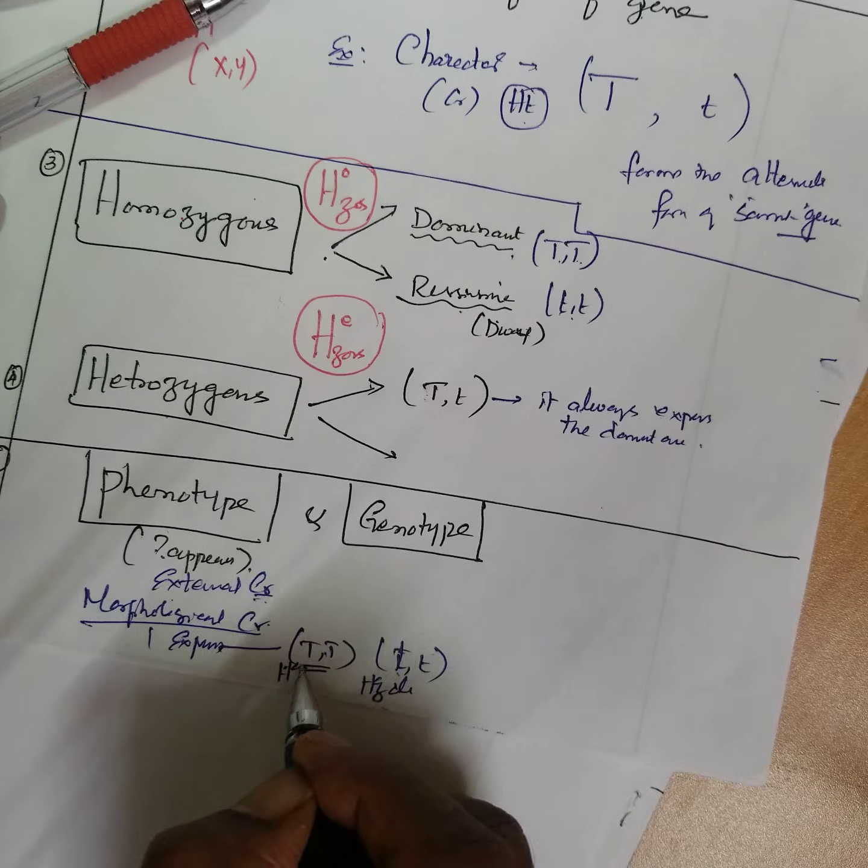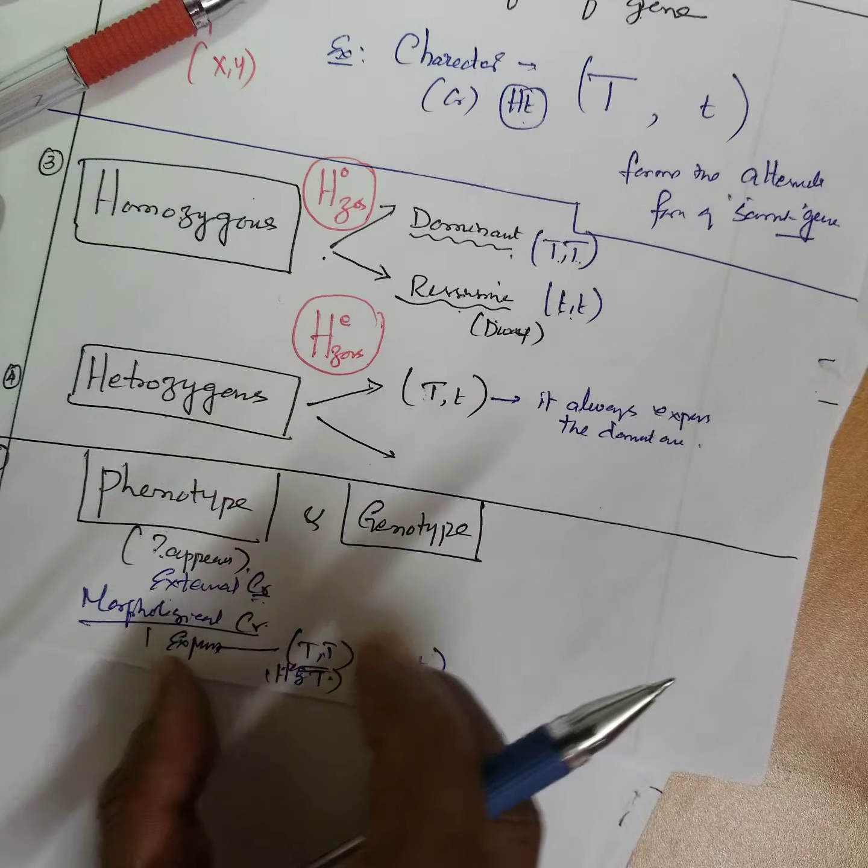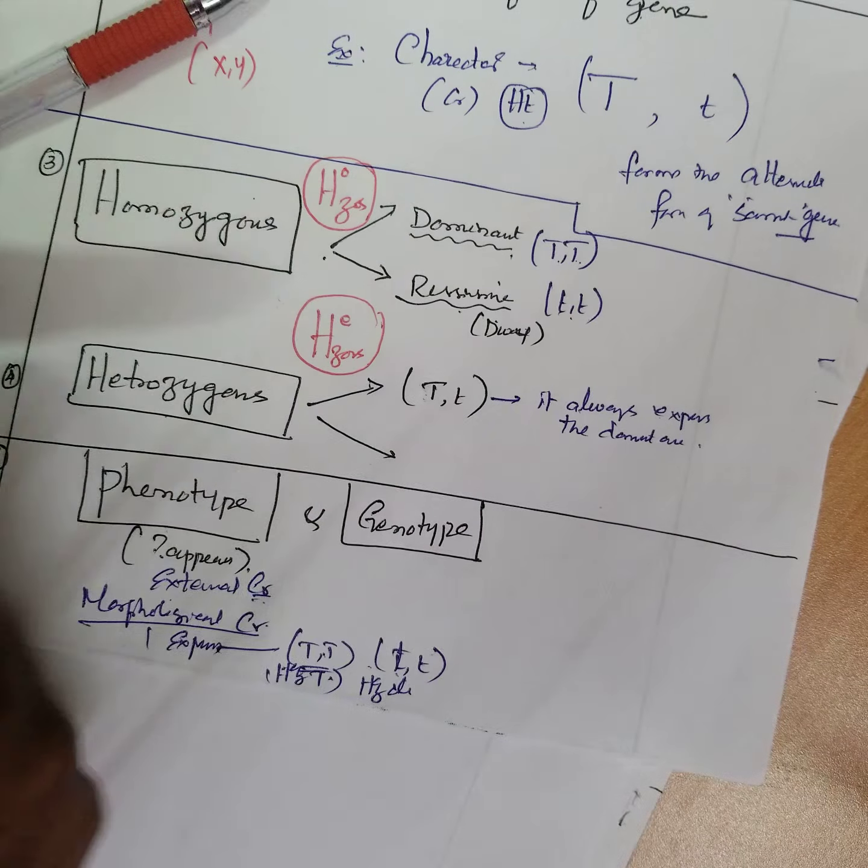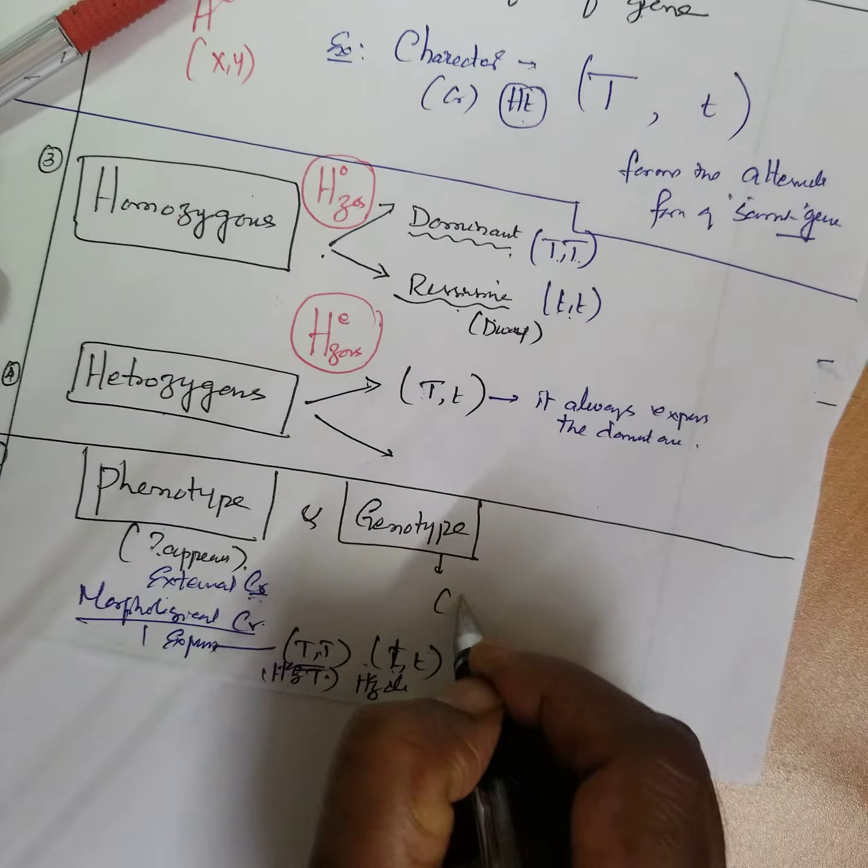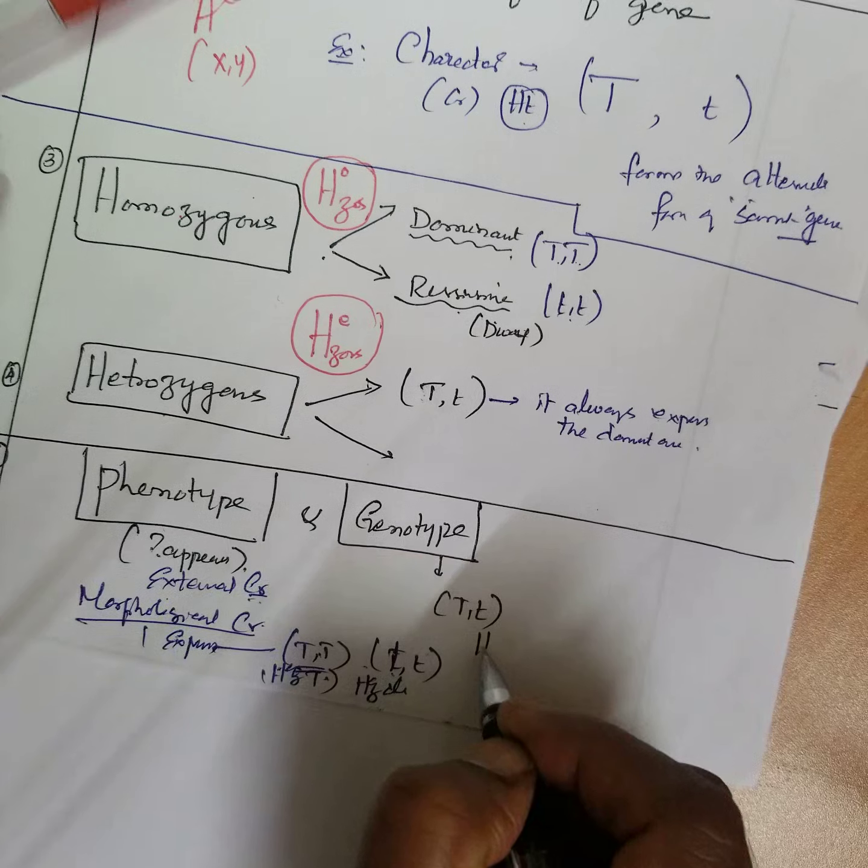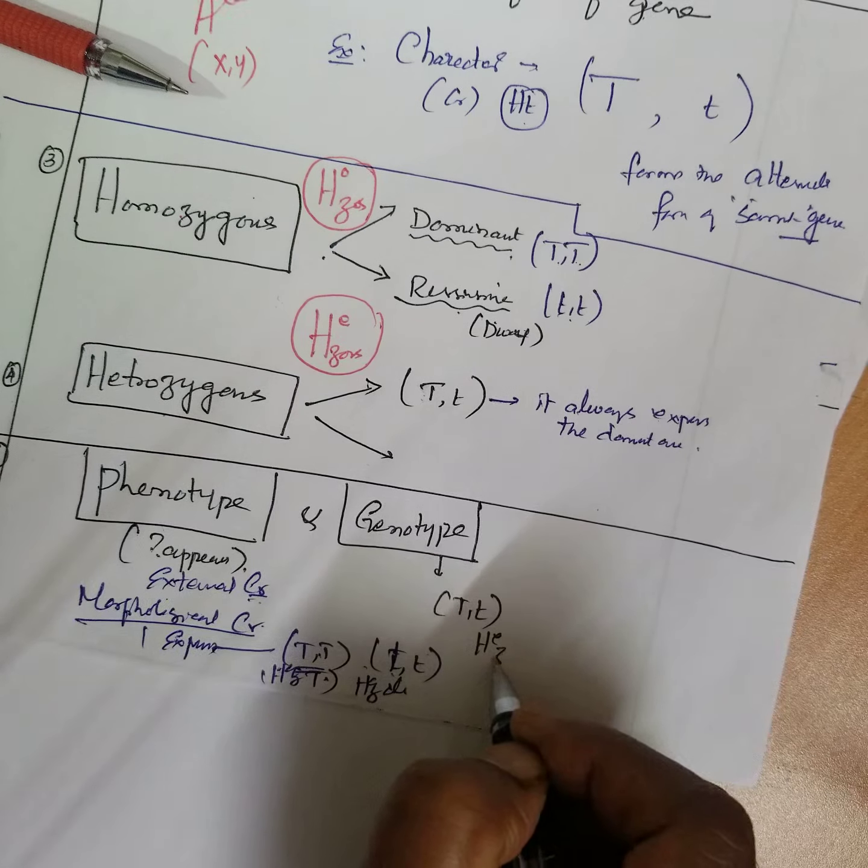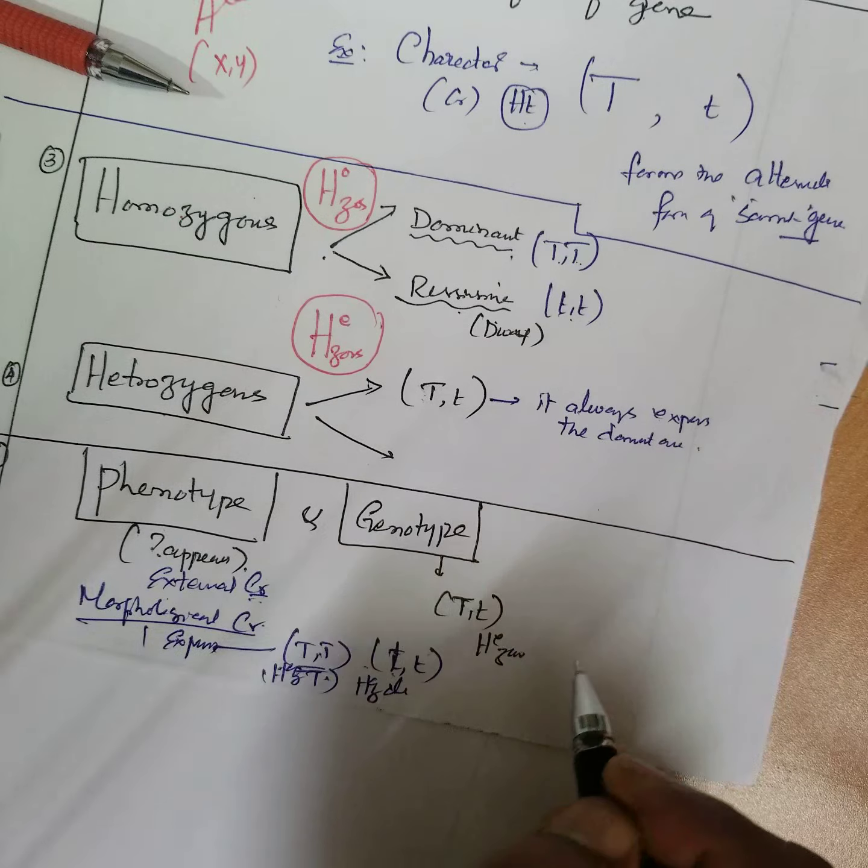This is homozygous tall. You can see that, but you can't see genotype. Genotype has to be analyzed, like TT or Tt, determined by experiment. This is called heterozygous tall.